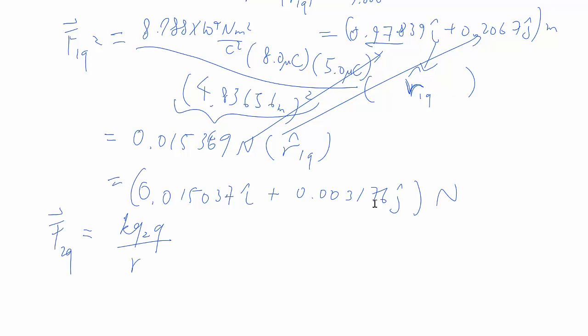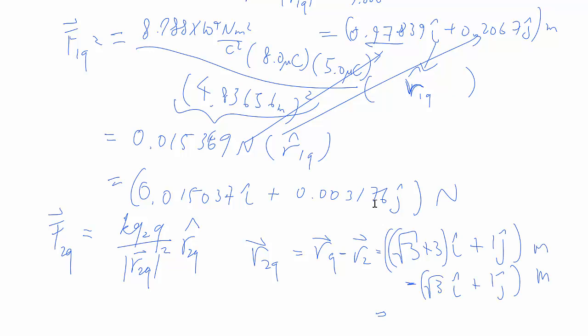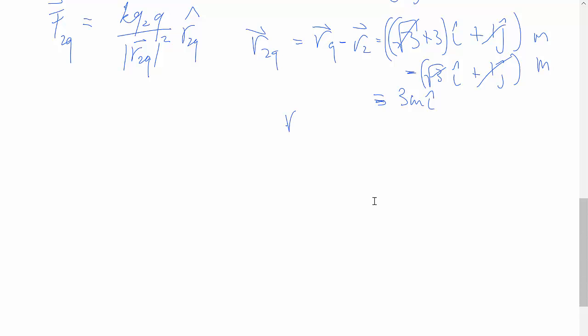This front part basically gives you that amount of newtons times that unit vector, which means take this and multiply to both of those and we end up with those numbers. Very similarly we do the same thing for charge 2. Again we need the displacement vector from 2 to q, final minus original. You could probably already see that it's going to be simply 3 meters in the i hat direction. We have root 3 minus root 3 in the i, 1 minus 1 in the j, so you're left with 3i.